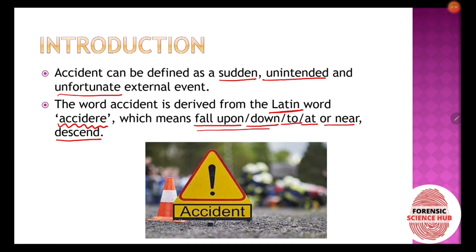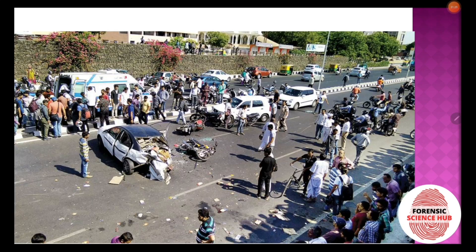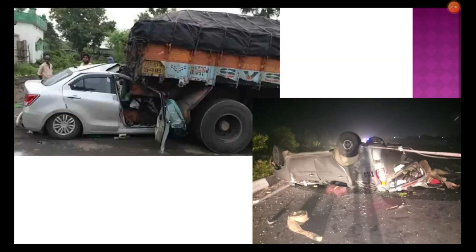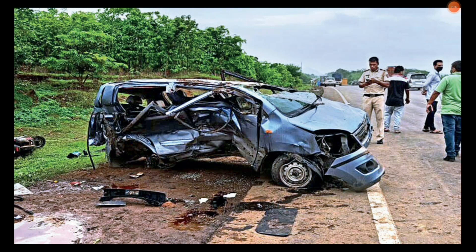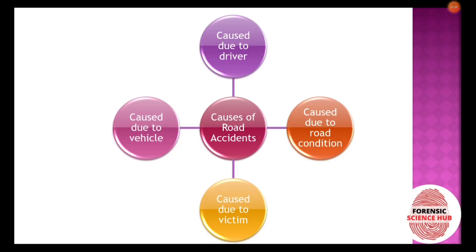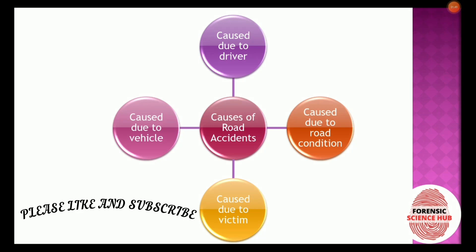An accident is a sudden, unintended, and unfortunate event. Here are some pictures of accidents taking place. Road accidents are caused due to certain reasons, and it's important to know what those reasons are. There are four main reasons due to which road accidents can be caused.